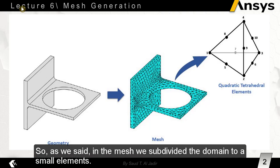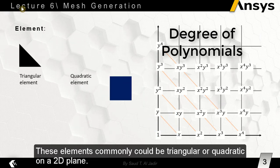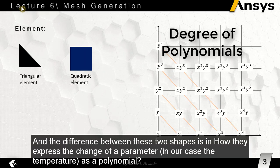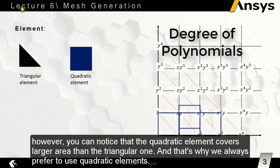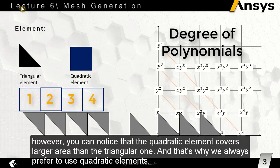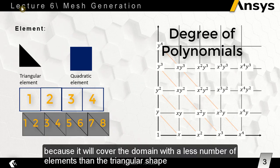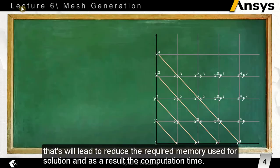In the mesh, we subdivide the domain into small elements. These elements commonly could be triangular or quadratic on a 2D plane. The difference between these two shapes is in how they express the change of a parameter — in our case, the temperature — as a polynomial. The quadratic element covers a larger area than the triangular one, so we prefer quadratic elements because they cover the domain with fewer elements, reducing required memory and computation time.